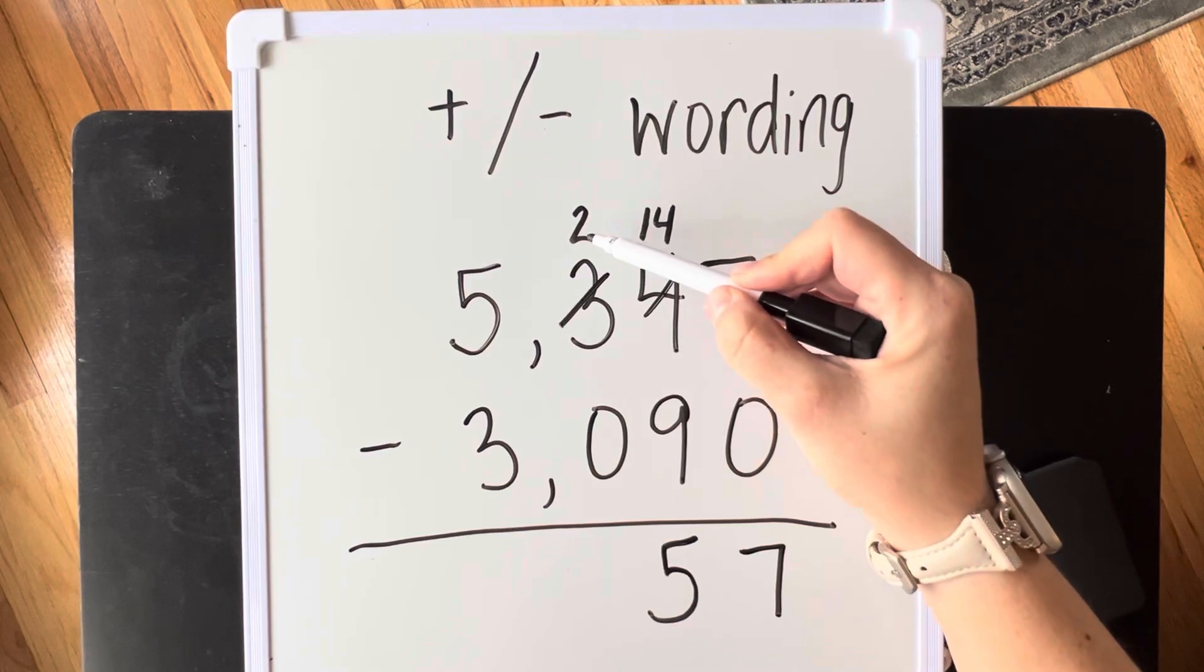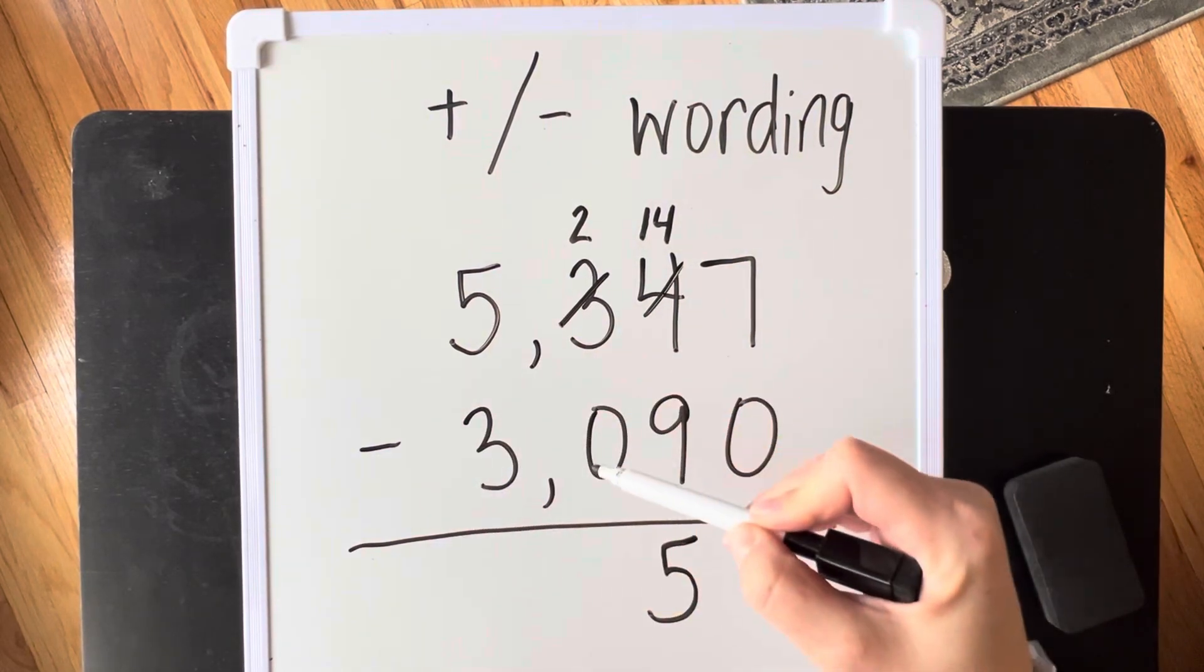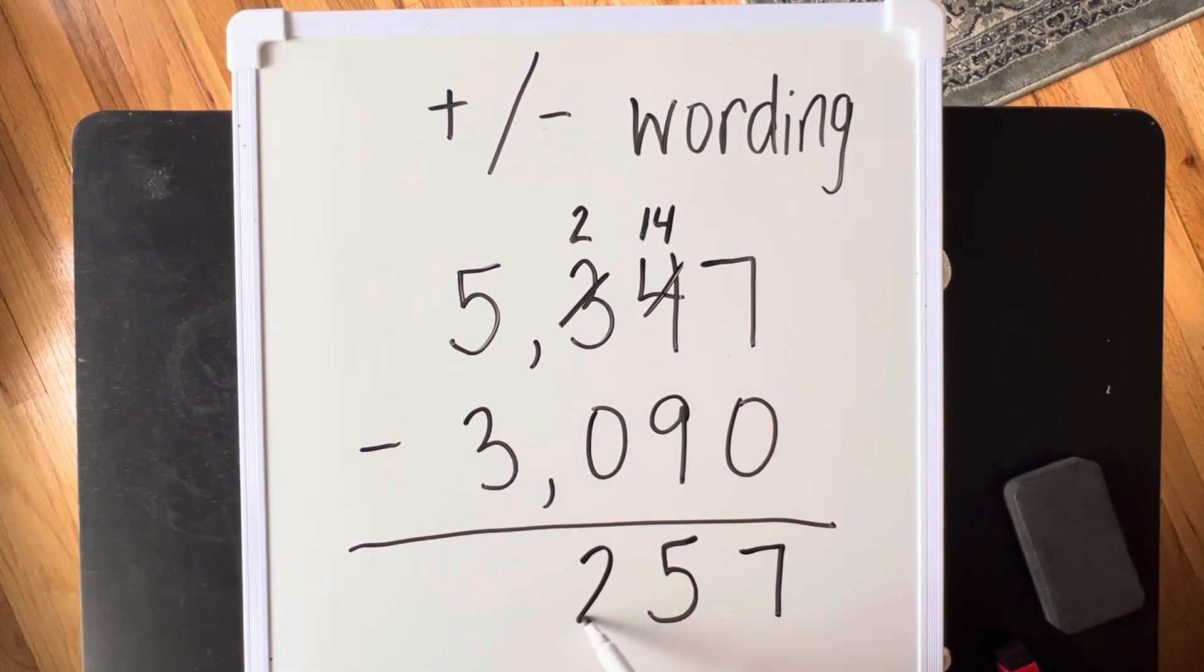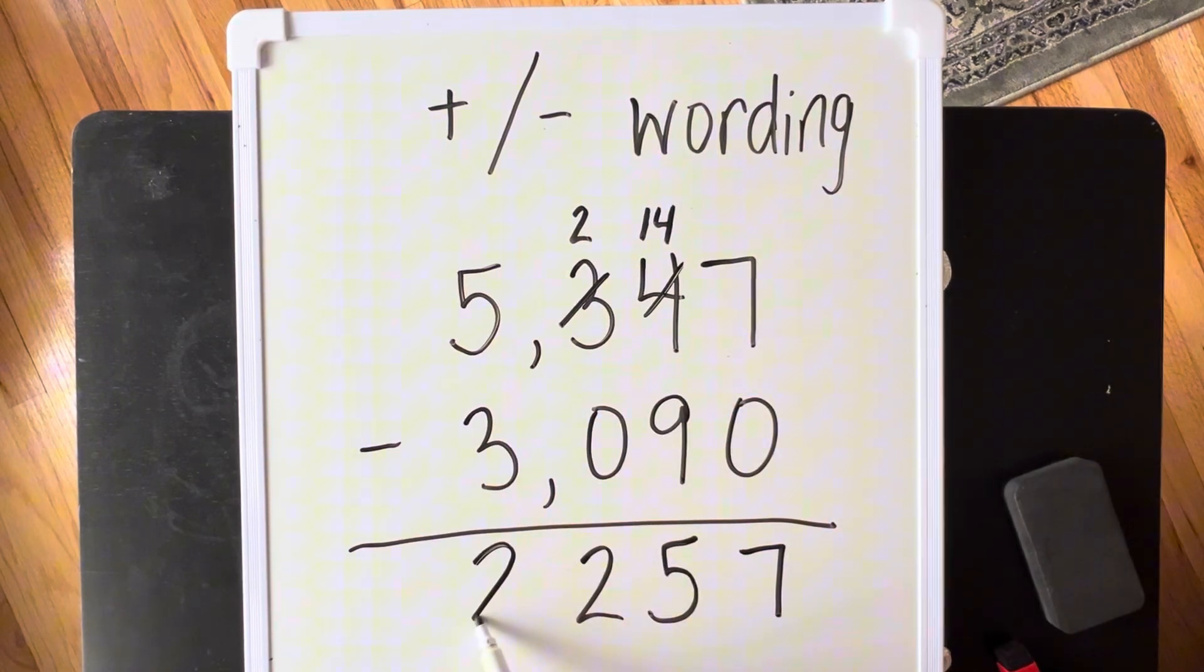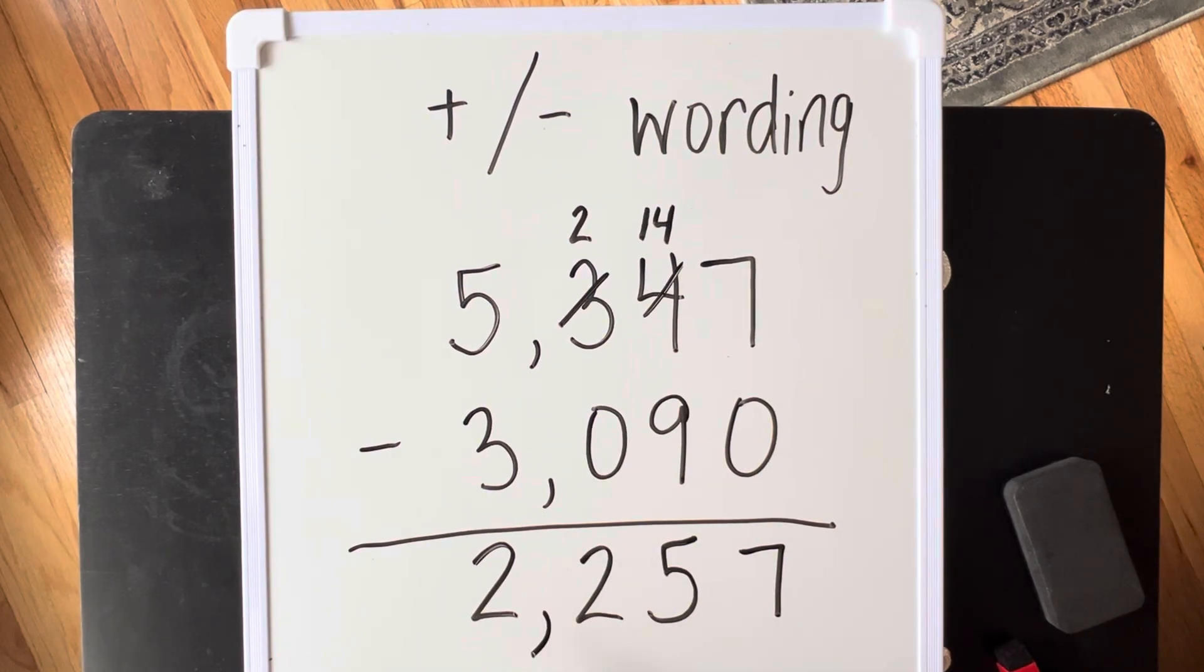2 hundreds minus nothing is still 2 hundreds. 5 thousands minus 3 thousands is 2. I'm going to come to the side of my number. 1, 2, 3 place values gets a comma.